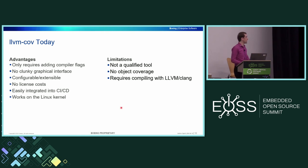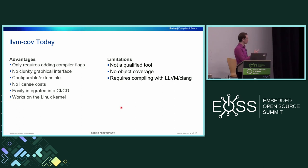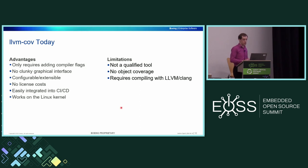However, there are still a number of limitations with llvm-cov today. First, it's not a qualified tool — that hurdle still needs to be jumped over. We have plans to qualify it, and similar to what was discussed this morning, we need to generate the artifacts to prove that the tool is reliable. It does not generate object code coverage. And it requires compiling with LLVM and Clang — this may or may not be a limitation. Many people compile with Clang now, but there are a bunch of tools in the ecosystem that assume GCC and don't always work with Clang. We have patches planned to get those tools working with Clang.